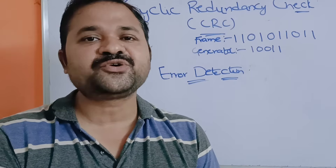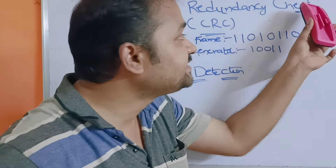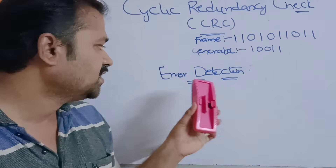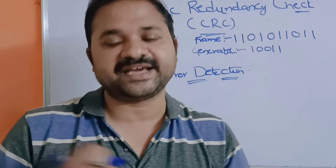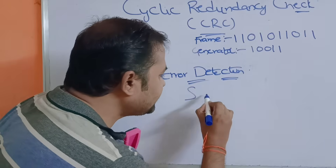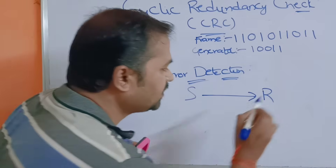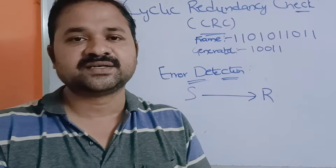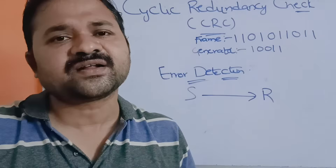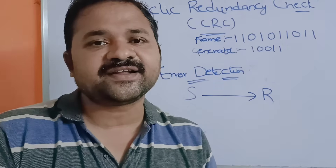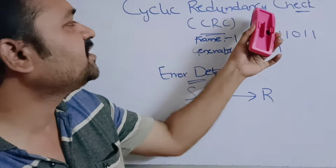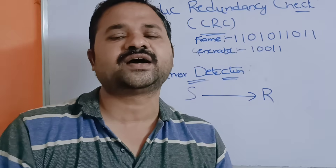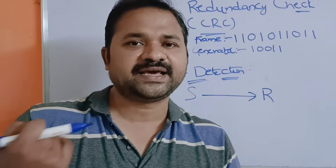In this video we are going to discuss about Cyclic Redundancy Check, in short CRC. CRC is mainly useful for error detection in the data link layer. Generally, the sender sends a message to the receiver, but there is a possibility that some data may be lost in the message. In order to detect the error, we have two approaches. In this video we will discuss CRC; in the upcoming video we will see the parity check method, which is also useful for error detection.